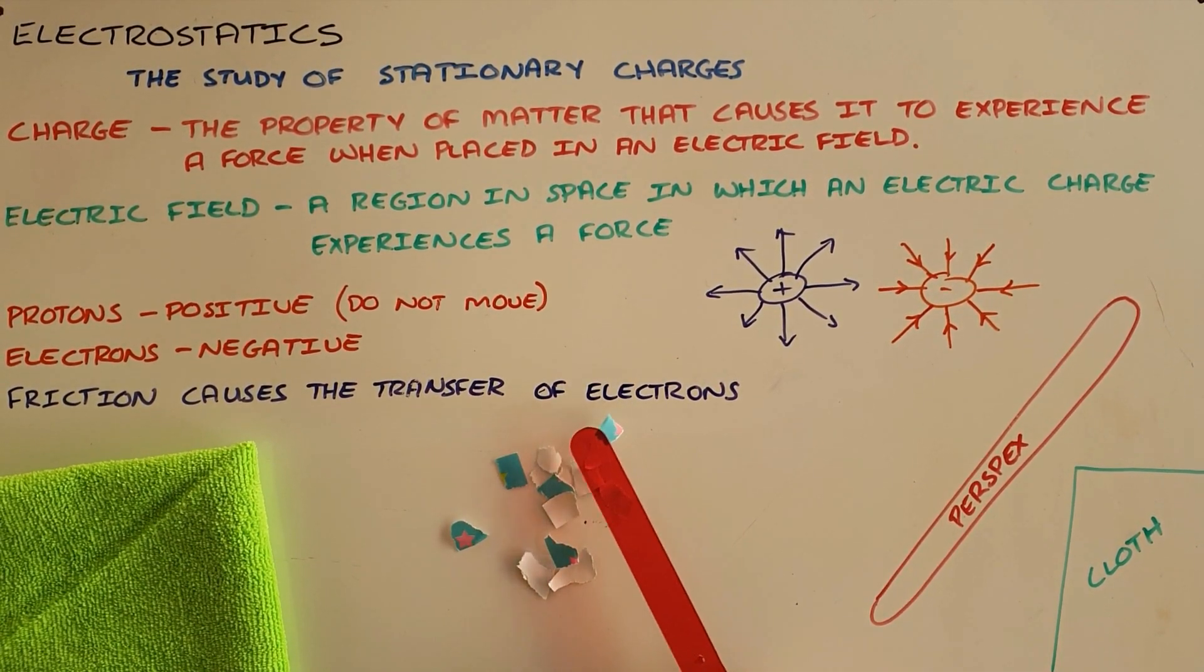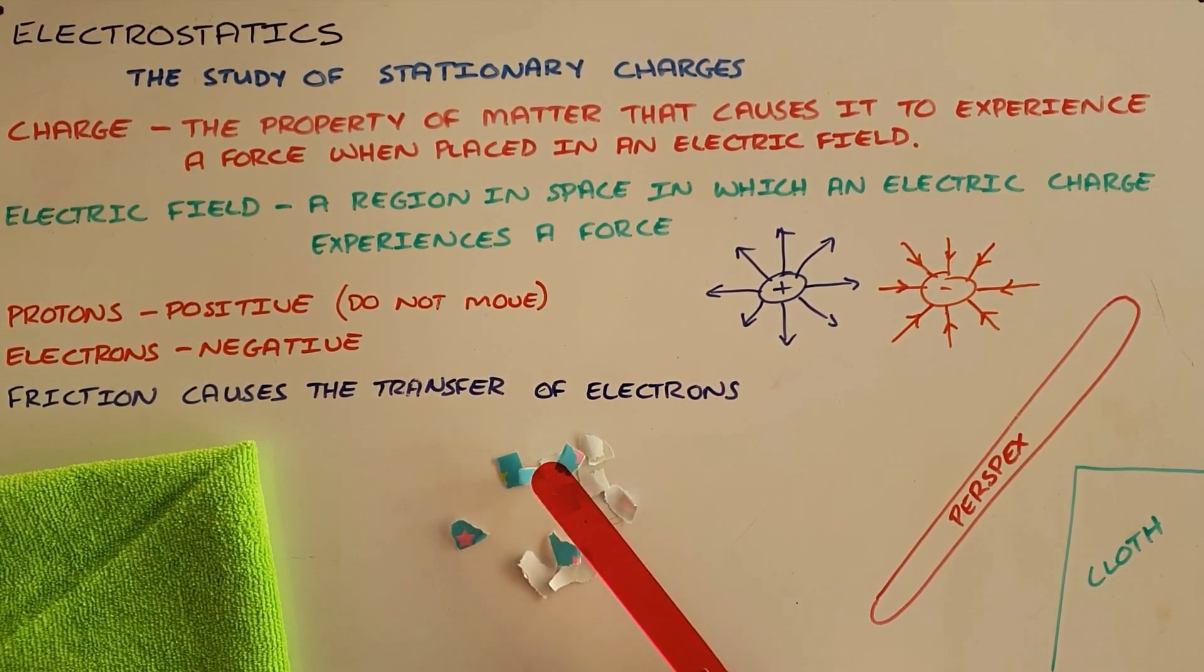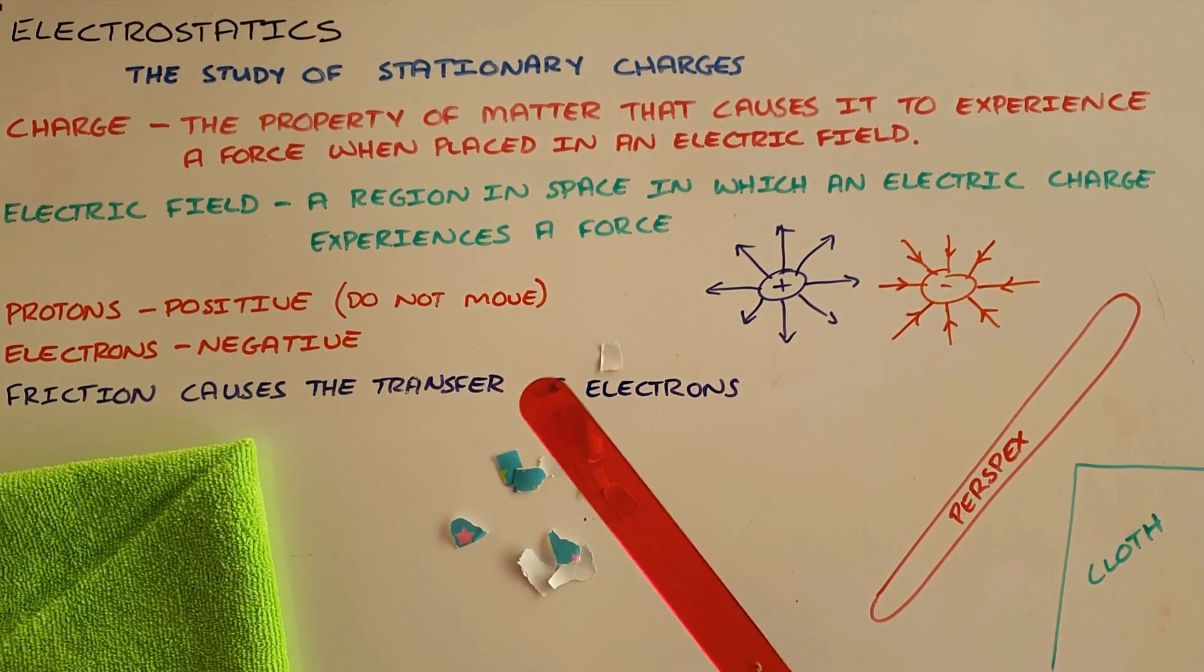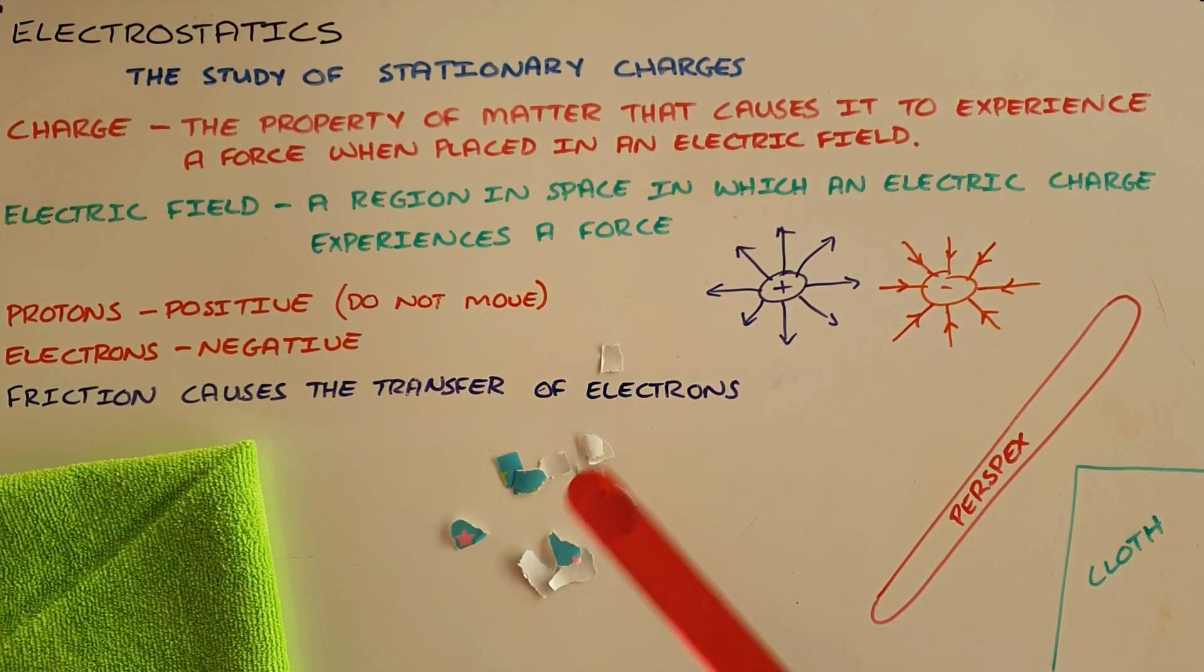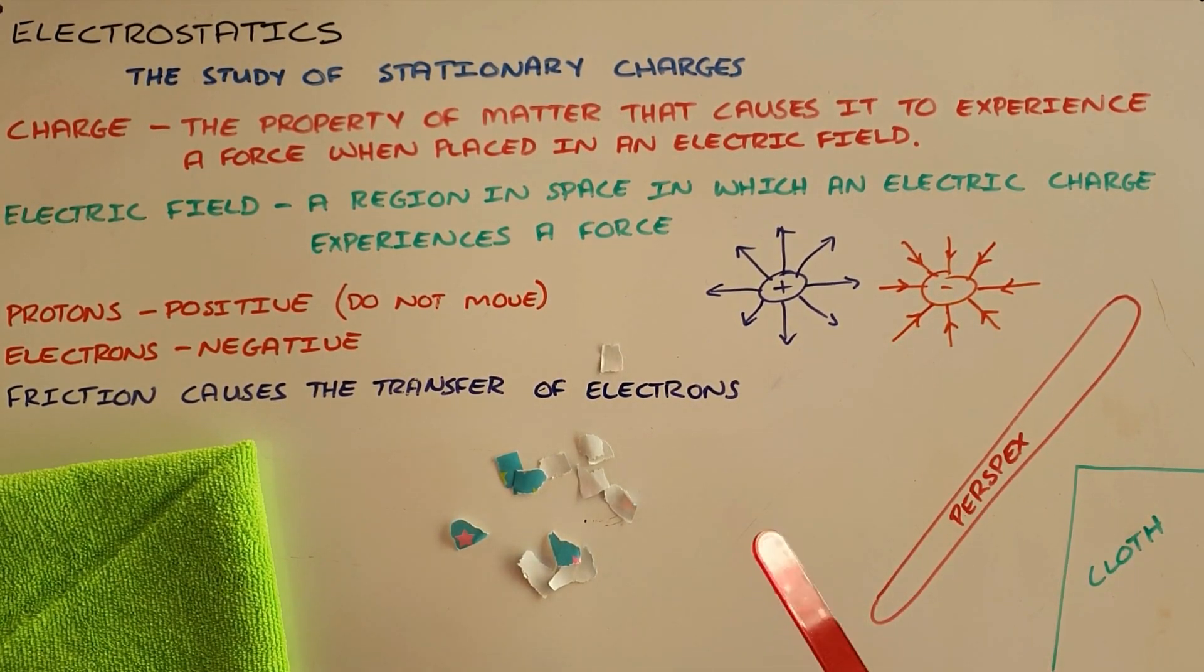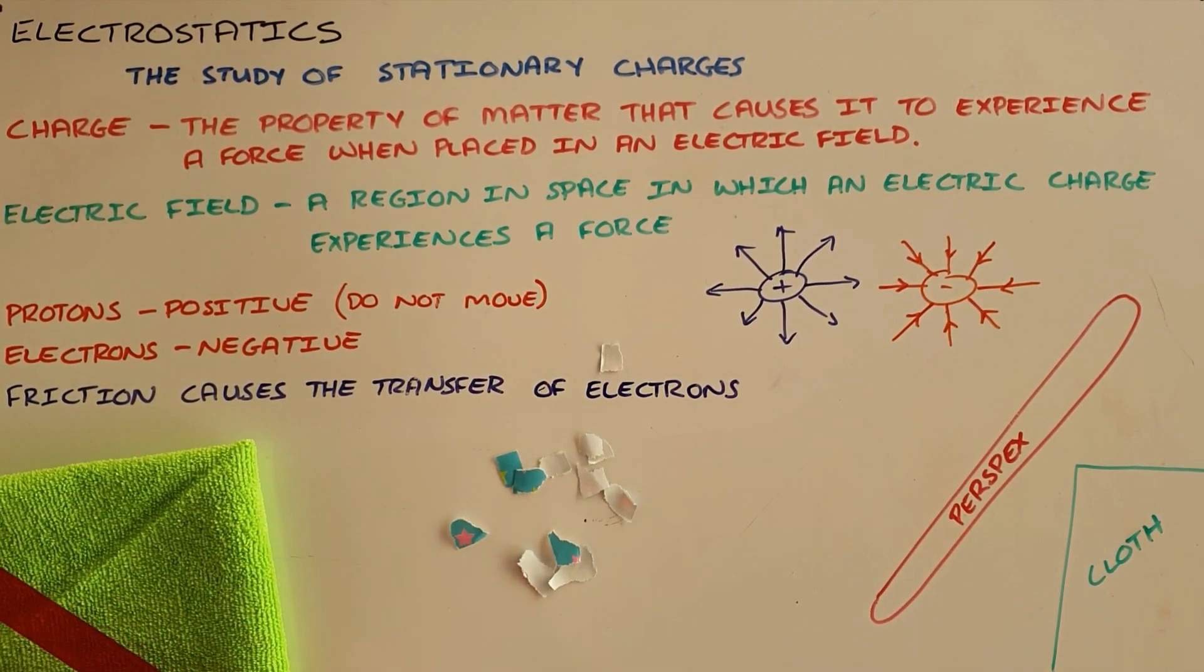This is as a result of the electric field that is built up around this. And then when they do touch, you will see that they are able to stick to the piece of perspex as a result of the charge buildup and the attraction between the negative charge that is built up on the perspex and the polarization of the pieces of paper.